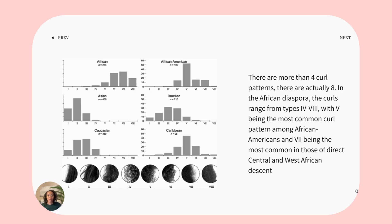For this video I want to focus on types four through eight, as those are the most common curl patterns seen in people of the African diaspora — those of African descent. When you look at the top two rows on the left, you see participants from central and west Africa, and on the right, African Americans mainly from the south and southeast United States. Among African Americans the most common curl pattern is type 5, whereas among those of African descent the most common is type 7.